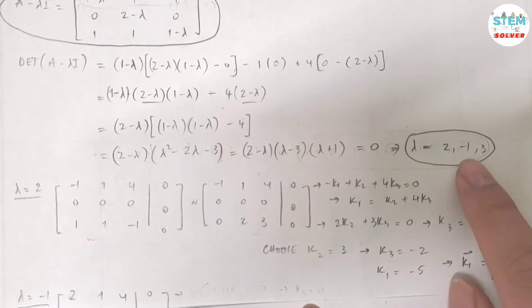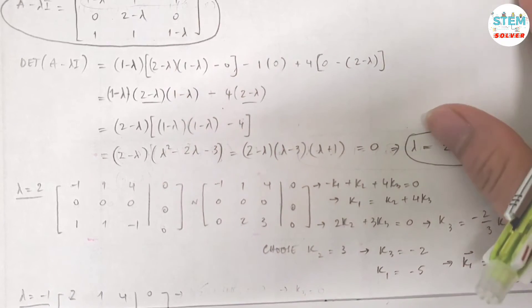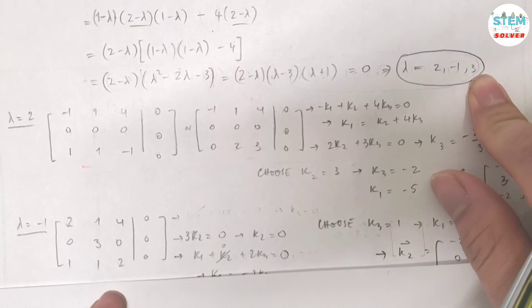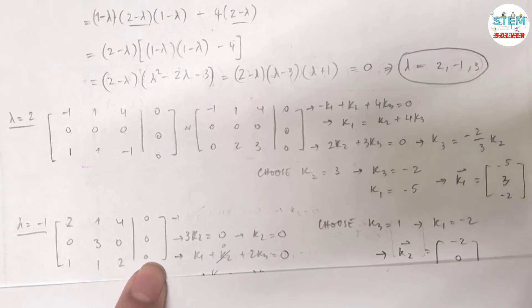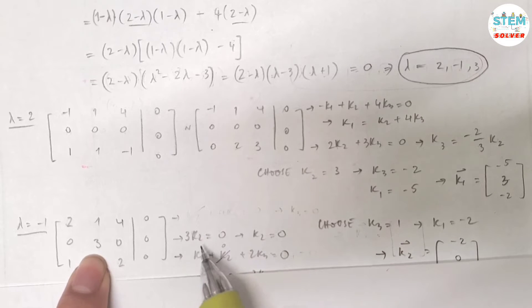Now you are going to do the same thing for λ equals -1. Plug it into this one, then that gives you this matrix right here augmented with 0. Look at this equation, second equation, you see that very quickly you know that k₂ equals 0.